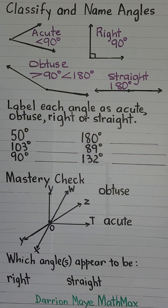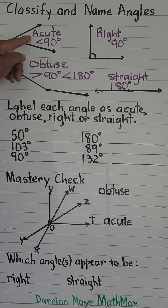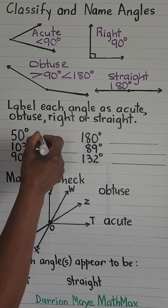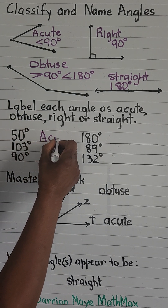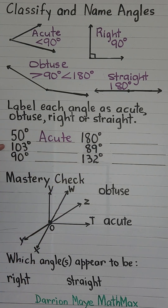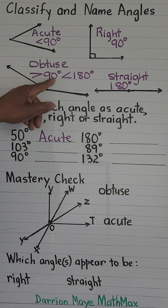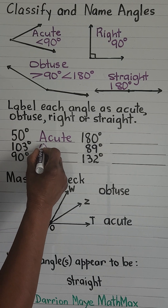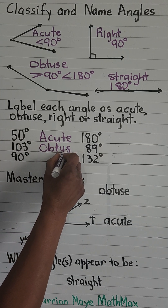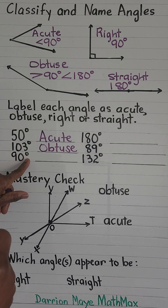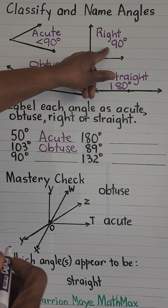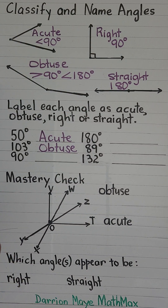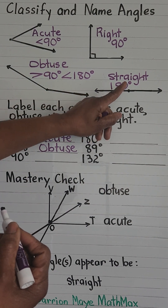50 degrees is less than 90, so this is an acute angle. 103 degrees is more than 90 but less than 180, so that is obtuse. 90 degrees is a right angle — exactly 90 degrees. A right angle has a square corner.